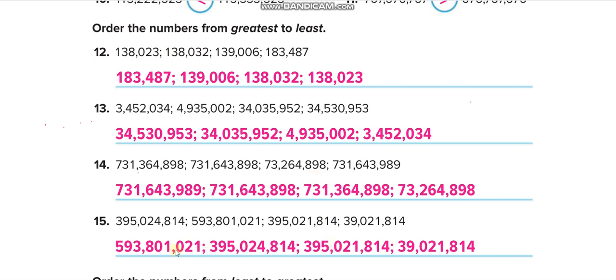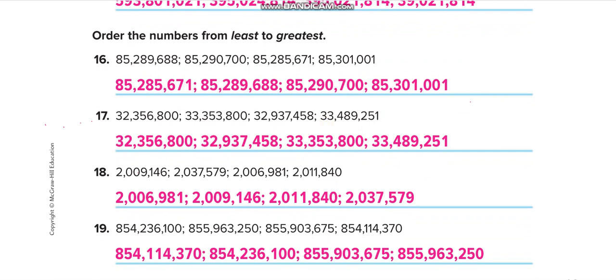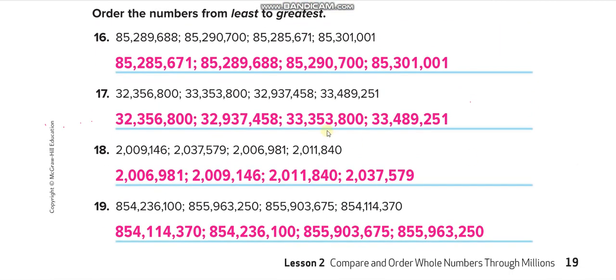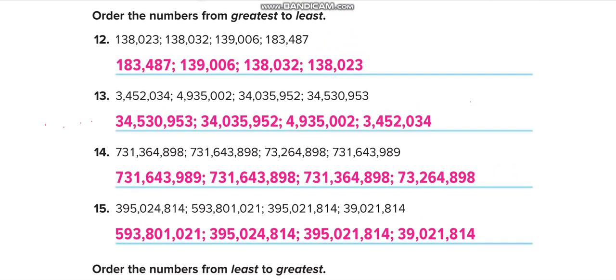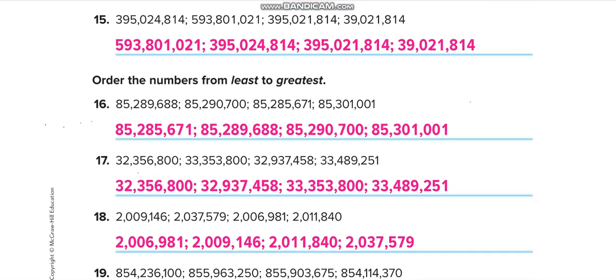Now here from least to greatest, I will solve one question for you guys and the remaining ones you can solve by yourself and then check your answers from this video. Let us solve the first one. We have to go from 16 to 19, from least to greatest. From 12 to 15 it was from greatest to least.